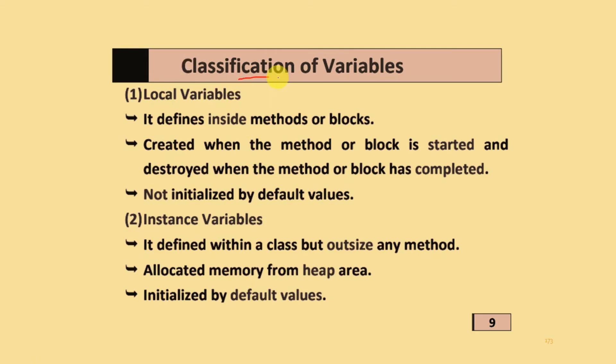Classification of variables: there are local variables and instance variables. Local variables are defined inside the method or blocks, created when the method or blocks are started, and destroyed when the method or block is completed. They are not initialized by default values.